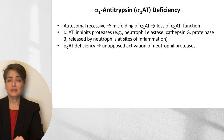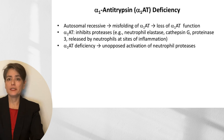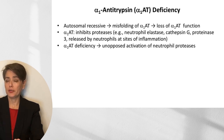Alpha-1 antitrypsin deficiency is an autosomal recessive disease involving misfolding of the alpha-1 antitrypsin protein with loss of function. The normal function of this protein is to inhibit proteases such as neutrophil elastase, cathepsin G, and proteinase 3, released by neutrophils at sites of inflammation. With this deficiency, there is unopposed activation of neutrophil proteases.